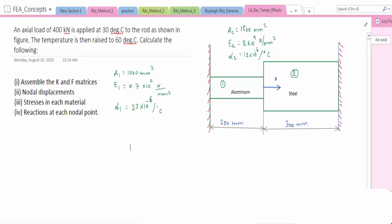Good day to all, today we are going to see about a problem, that is a bar is subjected to a temperature change. The temperature is initially at 30 degrees and it is raised to 60 degrees, we have to calculate the following: